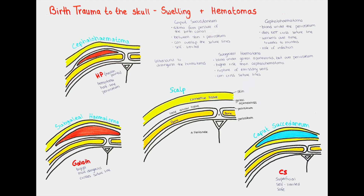Okay, so those were the three swellings. Let's simplify and memorize these easily. Starting with the least severe one, caput succedaneum. The key here is CS — and the S stands for several things: it's superficial, located right under the skin, self-limited, generally safe, and it can cross the suture.